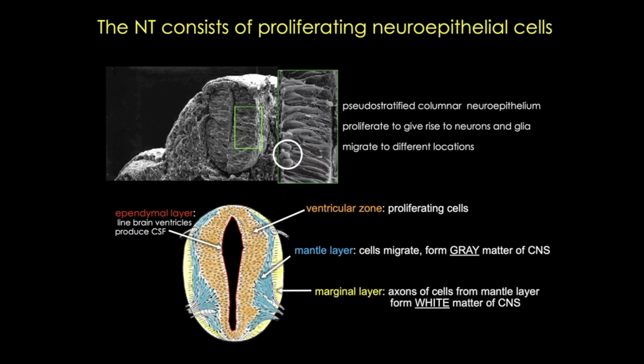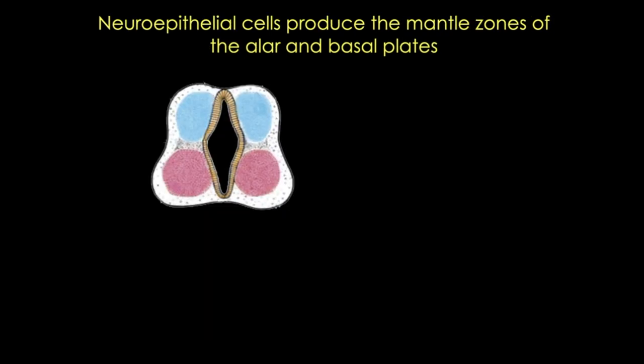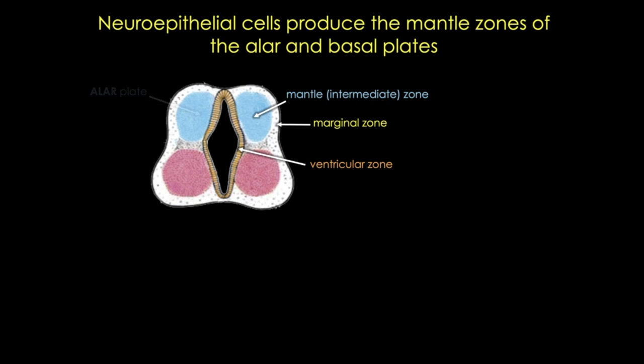The ependymal cells in red line the brain ventricles and will produce cerebrospinal fluid. These cells differentiate after the neurons and glial progenitors. The spinal cord develops from the caudal part of the neural plate and from the neural tube caudal to the fourth pair of somites. This early post-neurulation tube develops into dorsal and ventral halves — the dorsal or alar plate and the ventral or basal plate — producing longitudinal bulges of cells extending the length of the spinal cord, separated by the sulcus limitans.